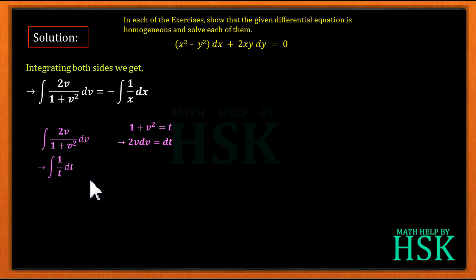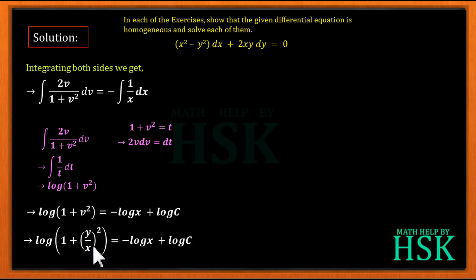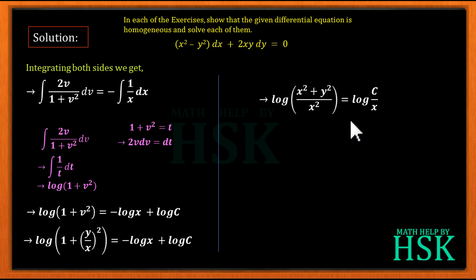Since t equals 1 plus v², we write the result as log(1 plus v²). Placing the value of this integral and the integral of 1/x dx as log x, and using log c as the integration constant, we get the combined expression. Substituting back v equals y/x, we simplify 1 plus y²/x² as (x² plus y²)/x², giving log of (x² plus y²)/x².